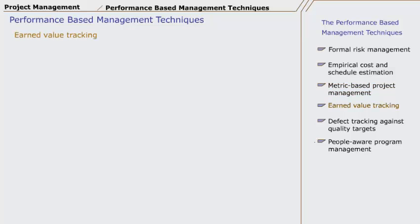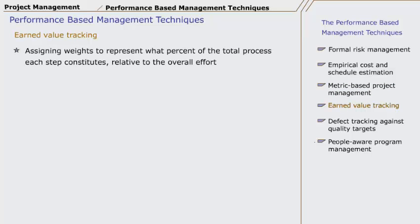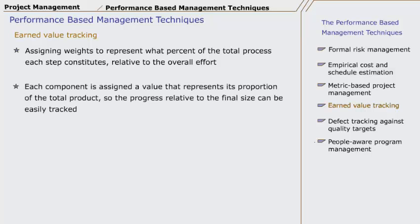Earned Value Tracking includes assigning weights to represent what percent of the total process each step constitutes relative to the overall effort. Each component is assigned a value that represents its proportion of the total product, so the progress relative to the final size can be easily tracked. Then an Earned Value Summary Chart, similar to the figure shown, is prepared to be discussed in a review meeting.